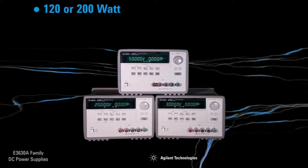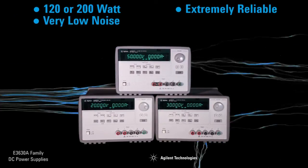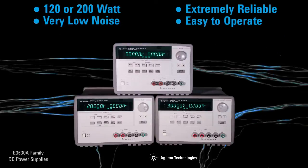So when you need a 120 or 200 watt programmable linear power supply that is extremely reliable, very low noise, and easy to use, look to the Agilent E3630 family of power supplies.